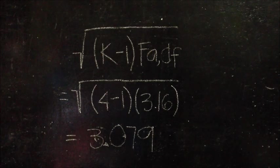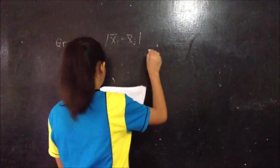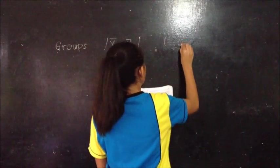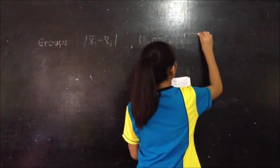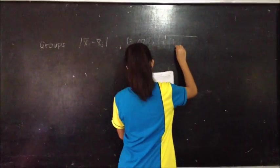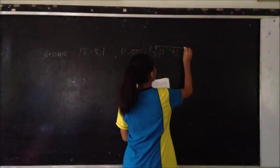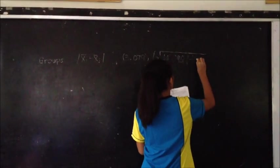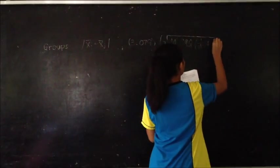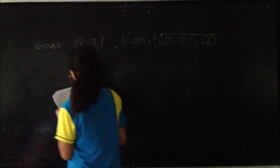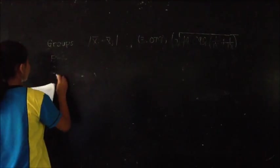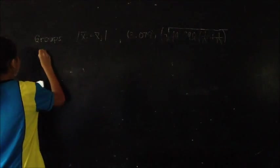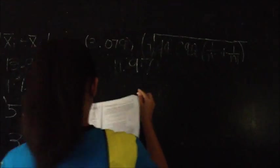Now that the needed data are complete, solve for the entire S value which would be 3.079 multiplied to the square root of 44.092, which is the MSE, multiplied to the sum of 1 over N sub I plus 1 over N sub J.